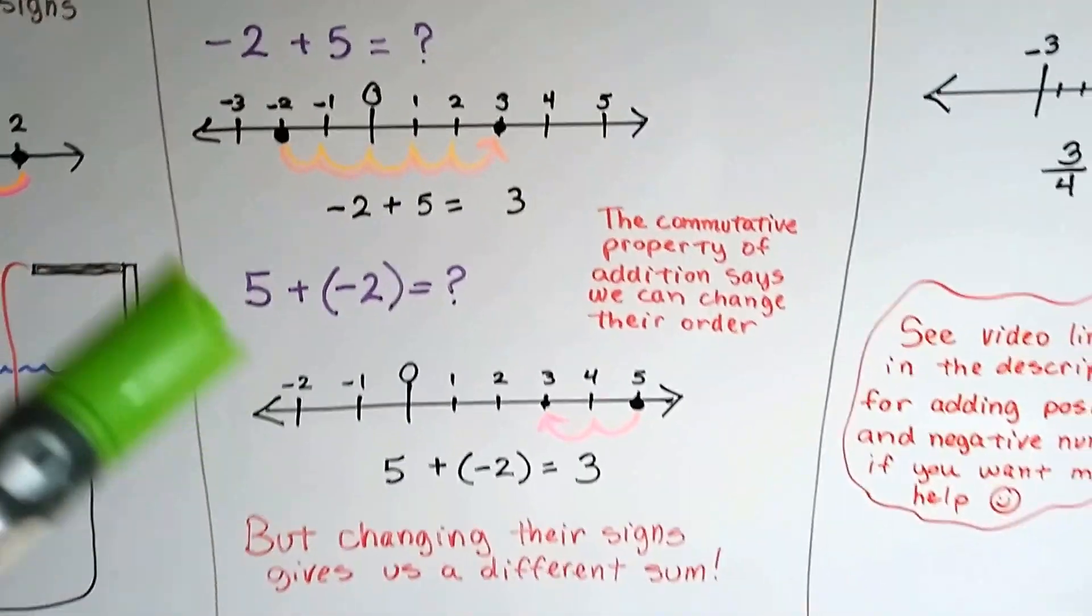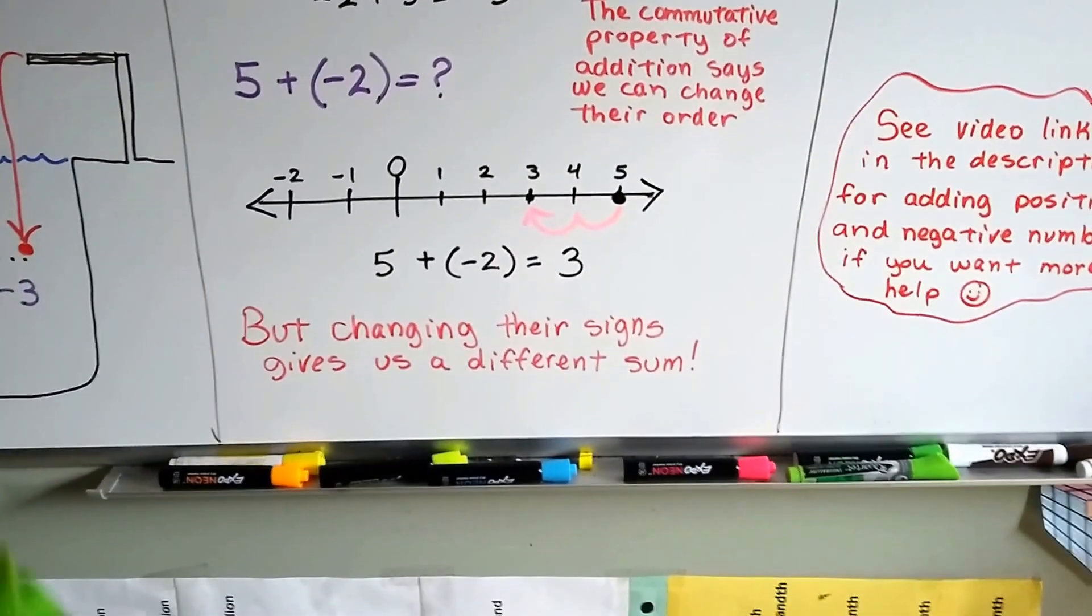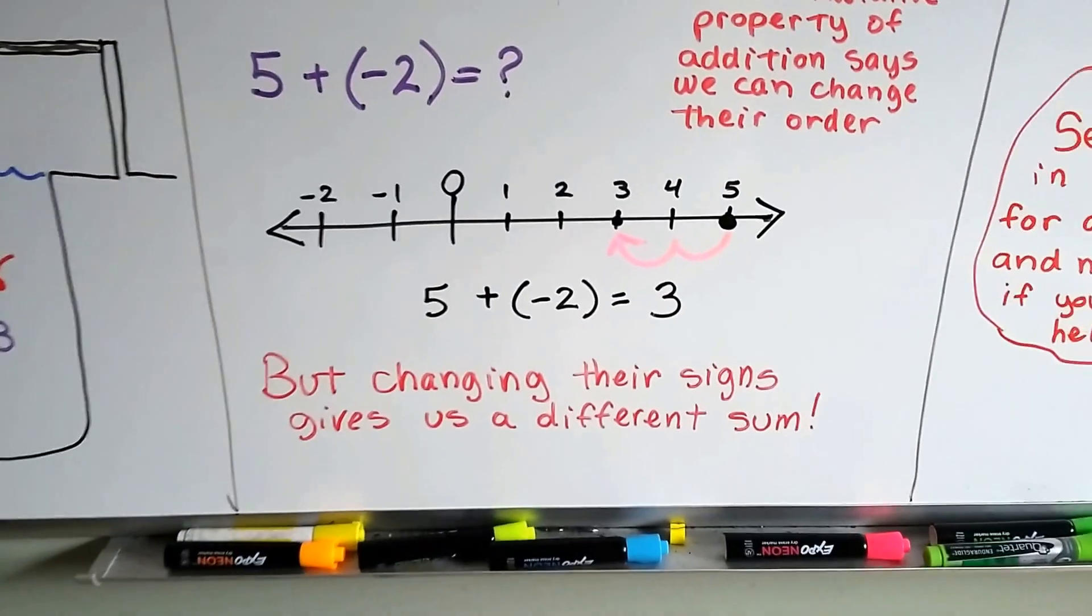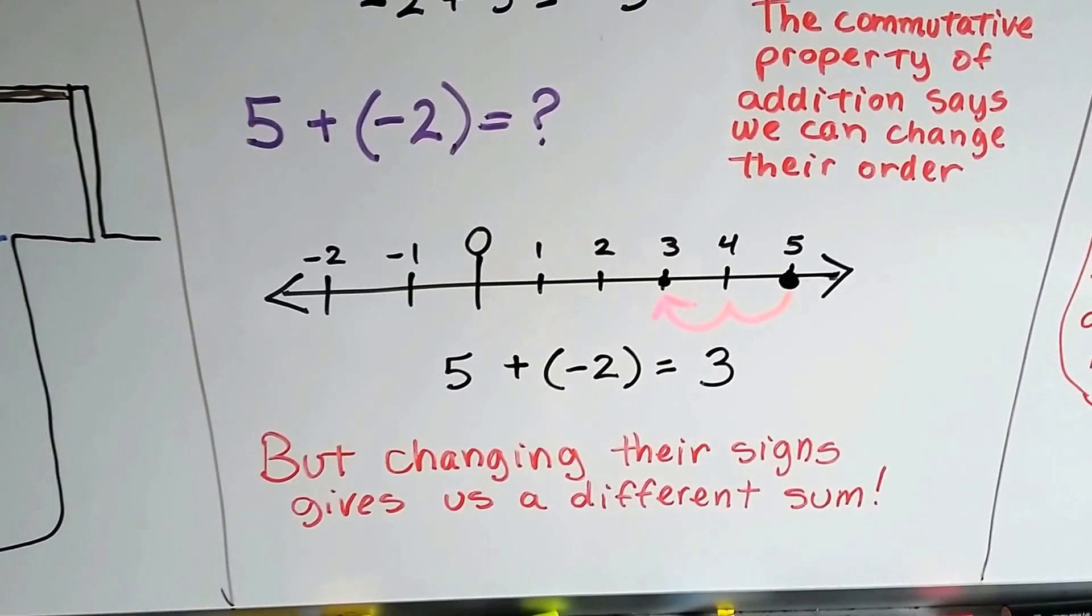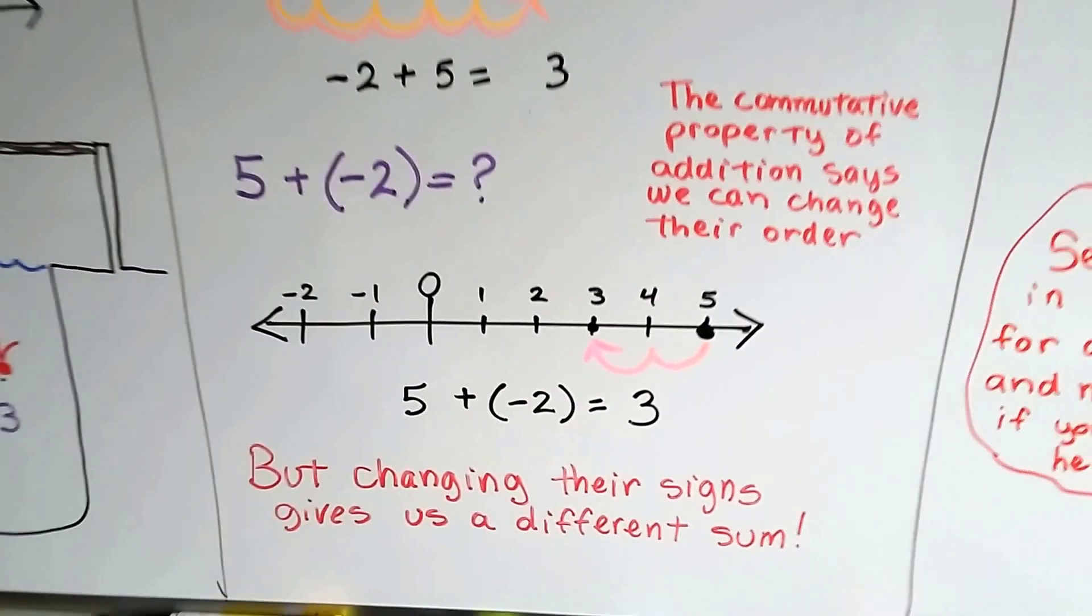But by changing their signs, when we change their signs, we get a different sum. So that's a big deal. We can change their order, but we can't change their sign.